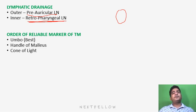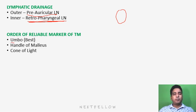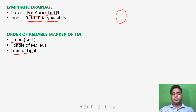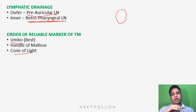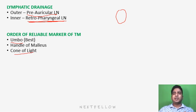What is the order of reliable landmarks of the tympanic membrane? Umbo is the best landmark, followed by the handle of malleus and cone of light. If the umbo, cone of light, and handle of malleus are all visible, we can say the tympanic membrane is normal.